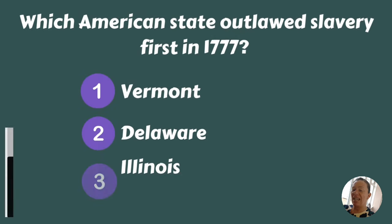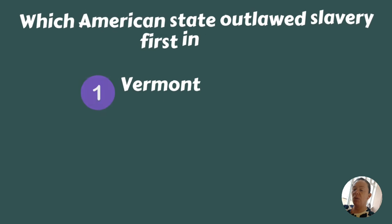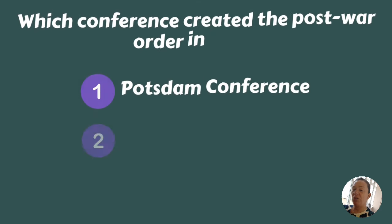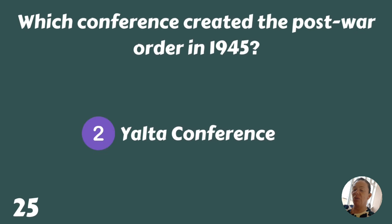Which American state outlawed slavery first in 1777 — Vermont, Delaware, or Illinois? Vermont. Which conference created the post-war order in 1945 — the Potsdam Conference, Yalta Conference, or Malta Conference? The Yalta Conference.